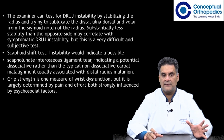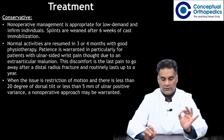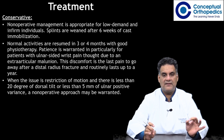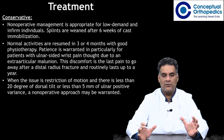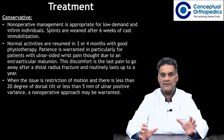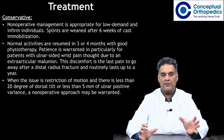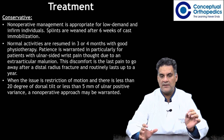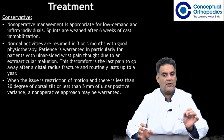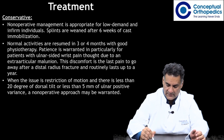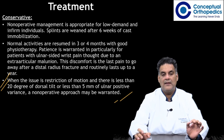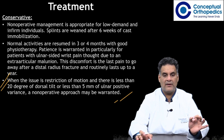Conservative non-operative management is appropriate for low-demand patients. Splints are weaned after six weeks of cast immobilization, and normal activities are resumed in three to four months with good physiotherapy. Ulnar-sided pain due to extra-articular malunion is the last pain to resolve, often lasting up to a year. Non-operative management may be warranted when there is less than 20 degrees of dorsal tilt and less than 5 mm of positive ulnar variance.